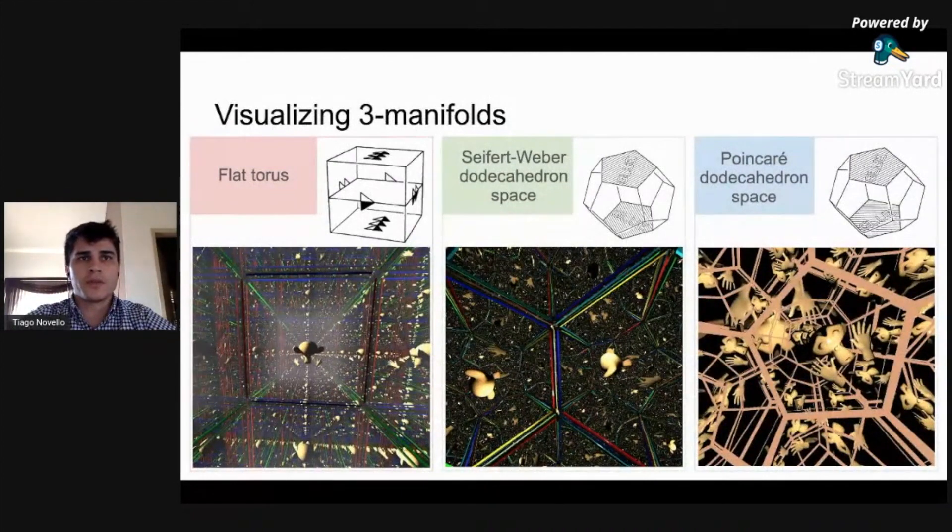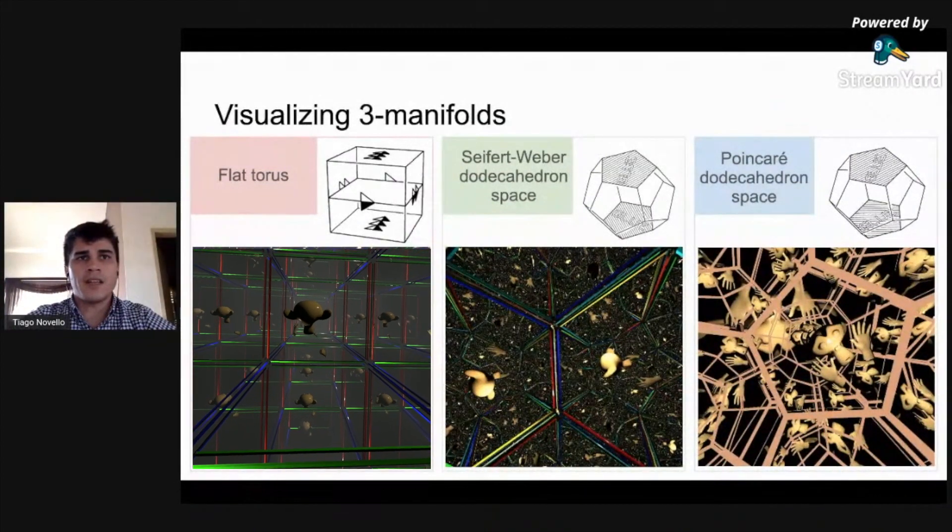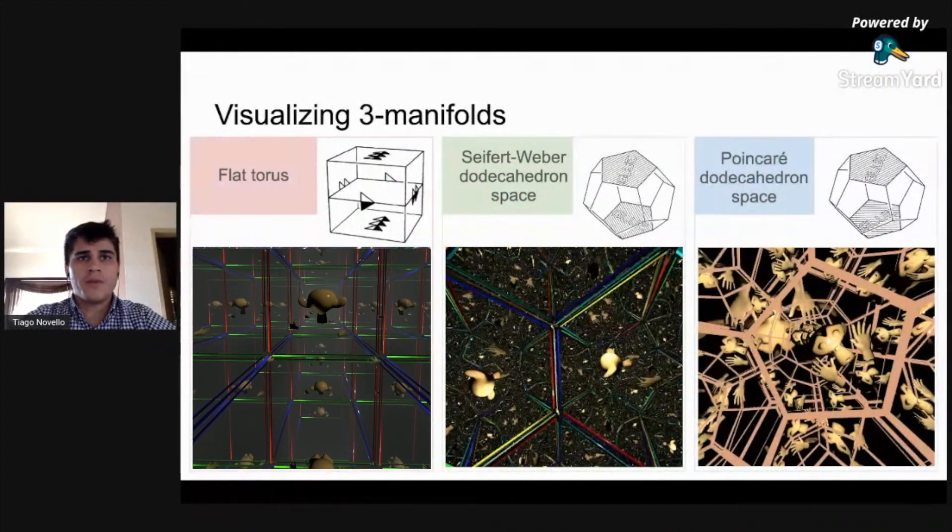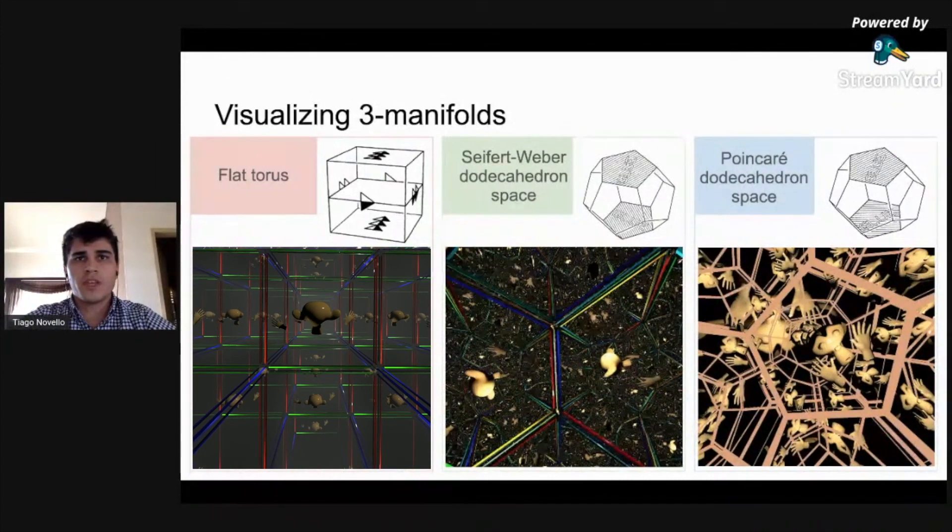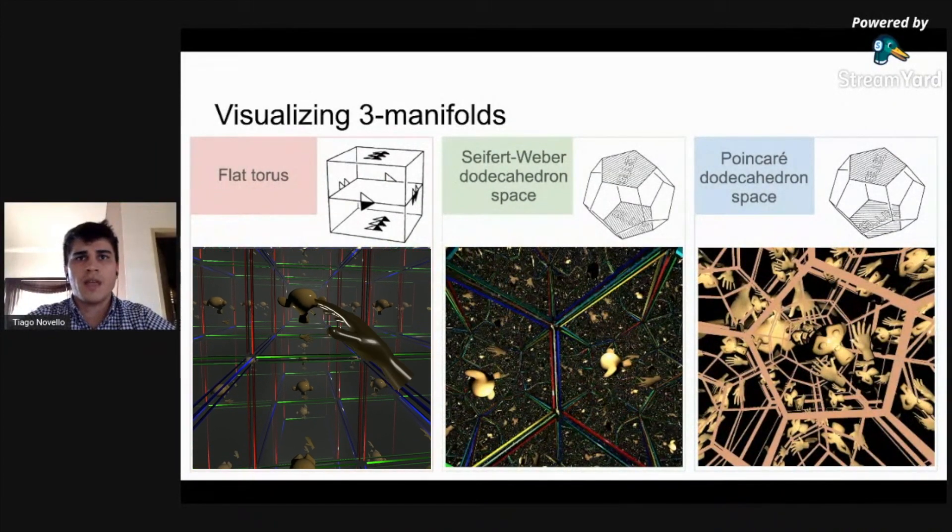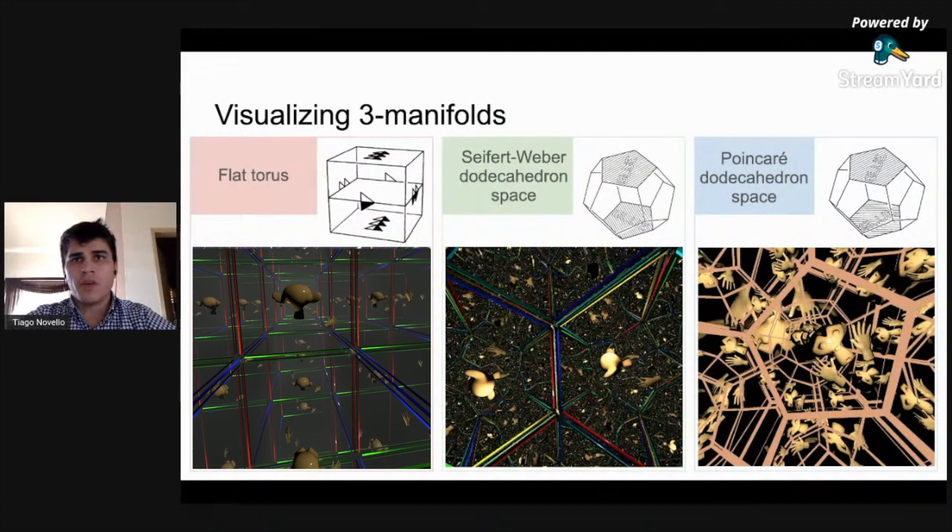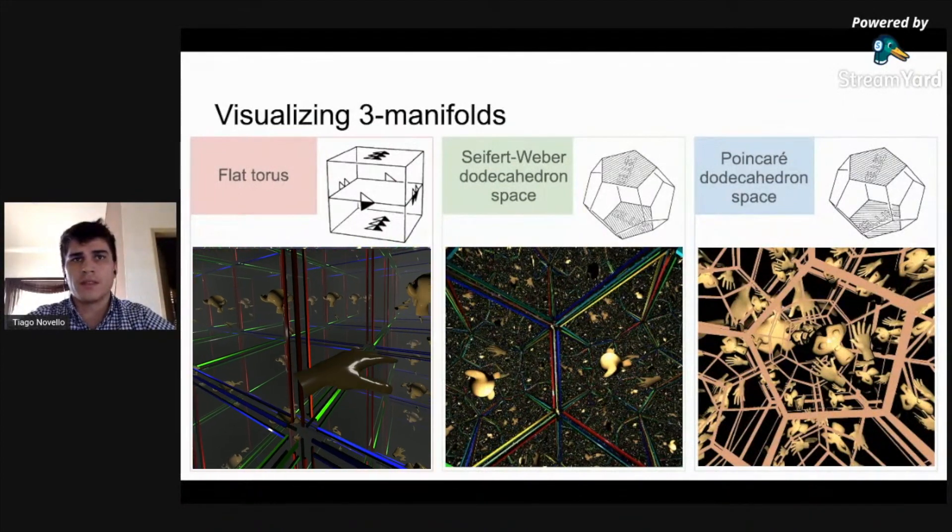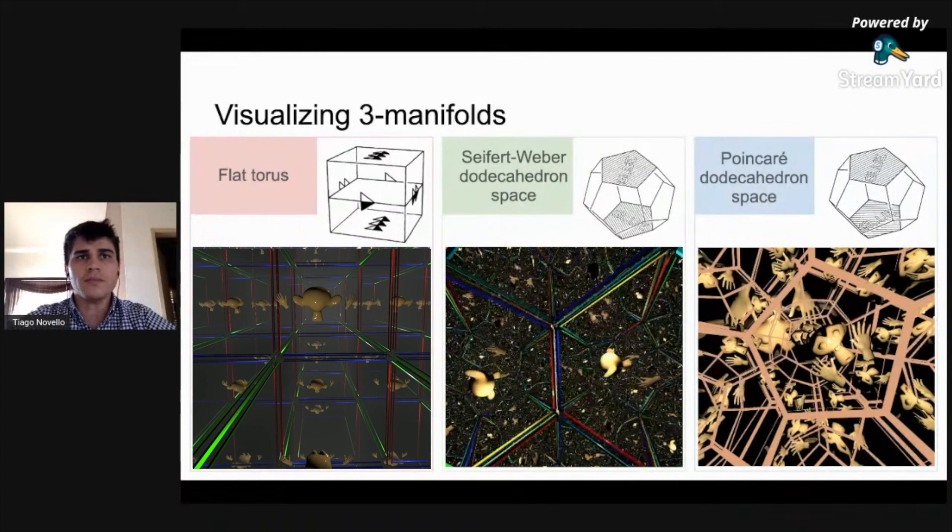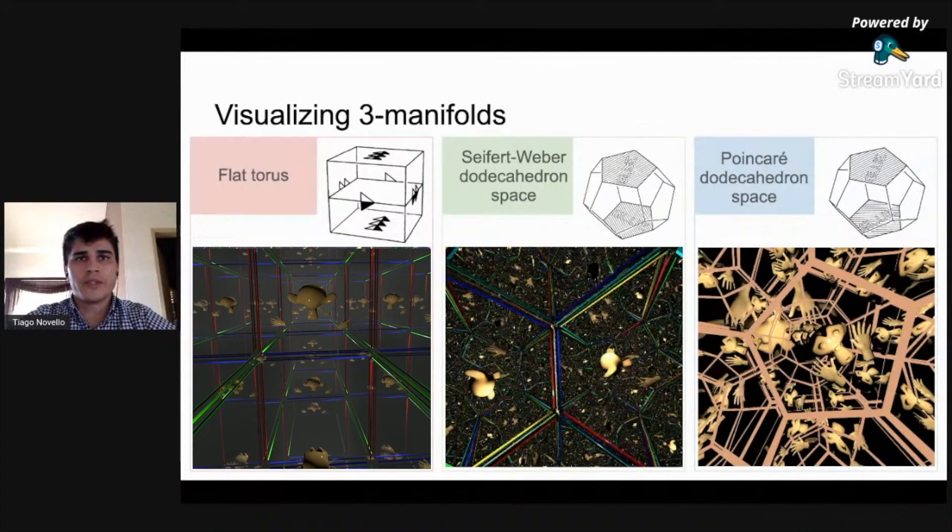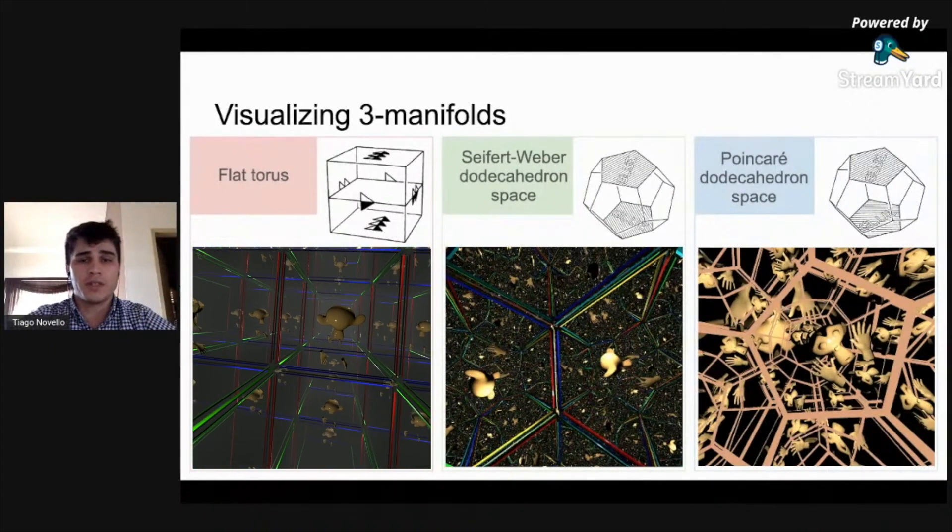We provide some results. On the left side, an inside view of the flat torus. We use the cube to set up our scene, which is a unique monkey mesh endowed with hands and the cube edges. The face pairing produces a tessellation of the Euclidean space.